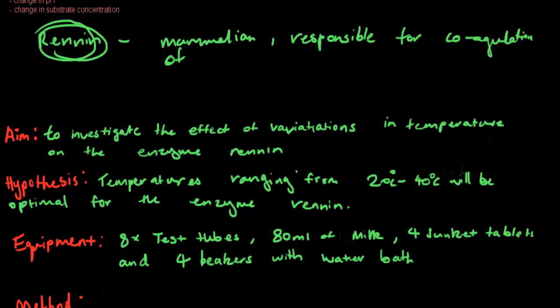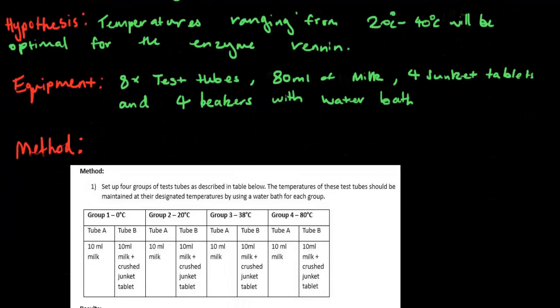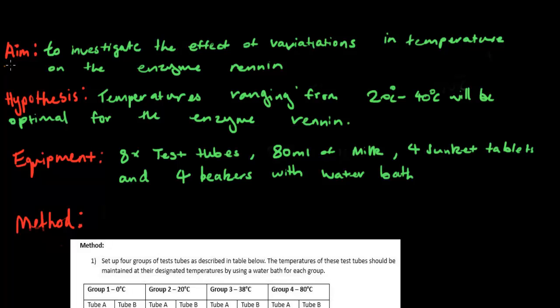The aim is to investigate the effect of variations in temperature on enzyme renin. The hypothesis: temperatures ranging from 20 degrees Celsius to 40 degrees Celsius will be optimal for the enzyme renin. That's just my hypothesis based on opinion.